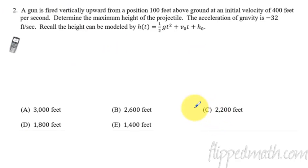Number 2, I'm going to set this one up but I won't do all the number crunching. We have a gun fired vertically upward, position of 100, initial velocity of 400, and the gravity of course is negative 32 feet per second. So let's plug that stuff in.